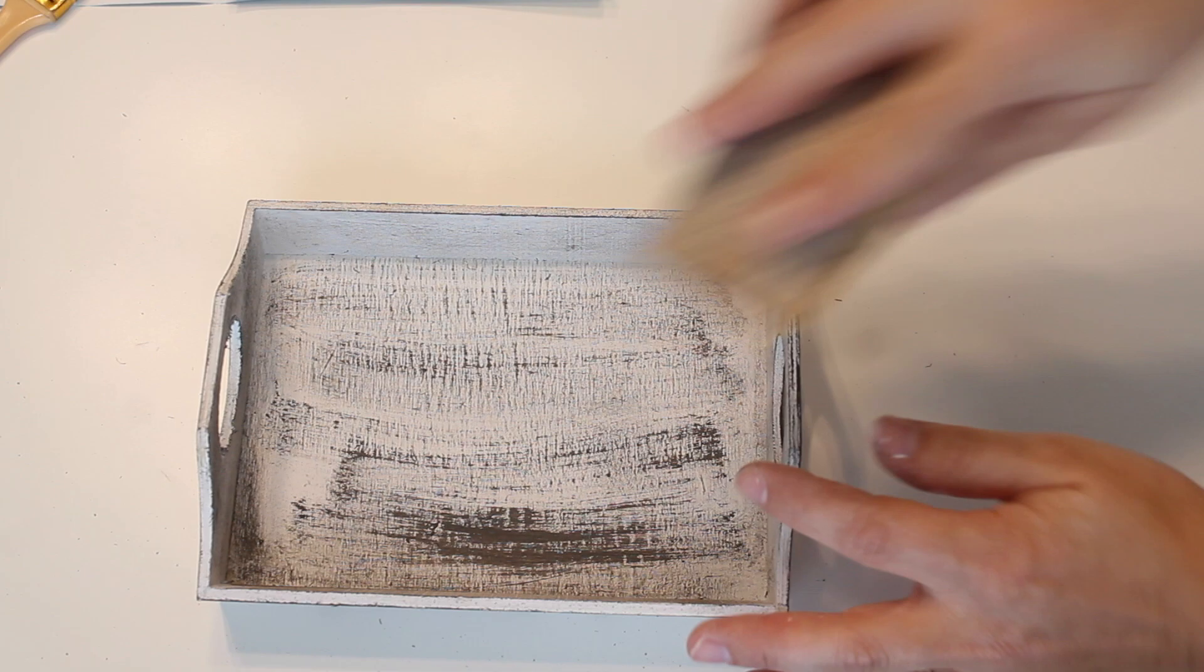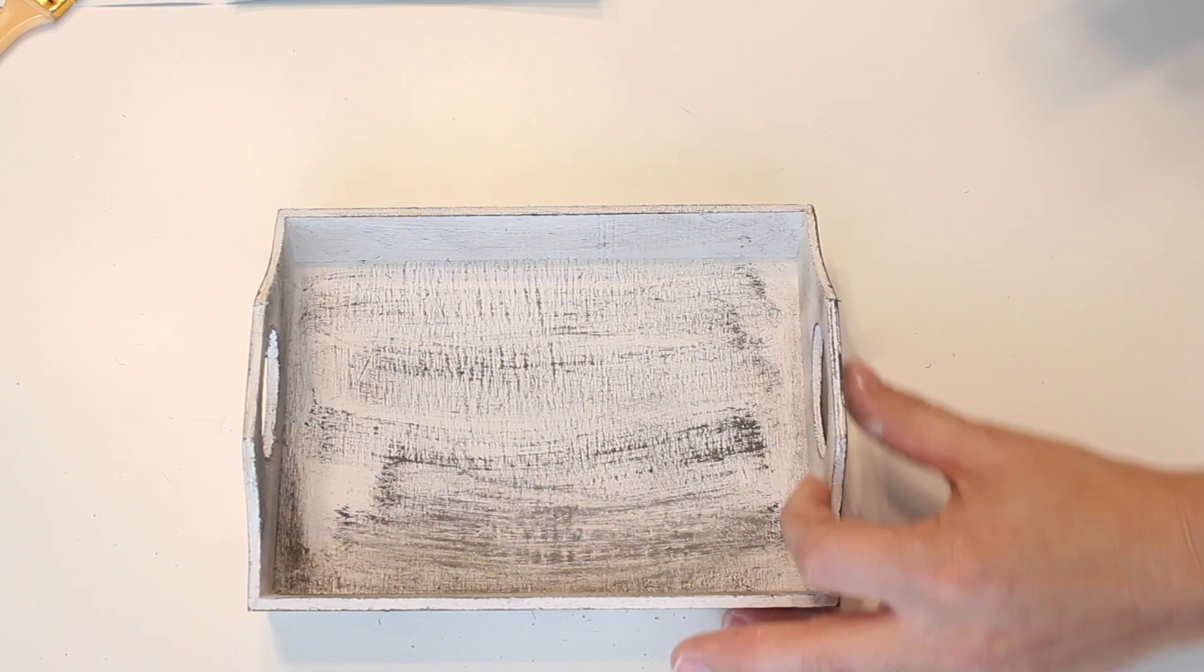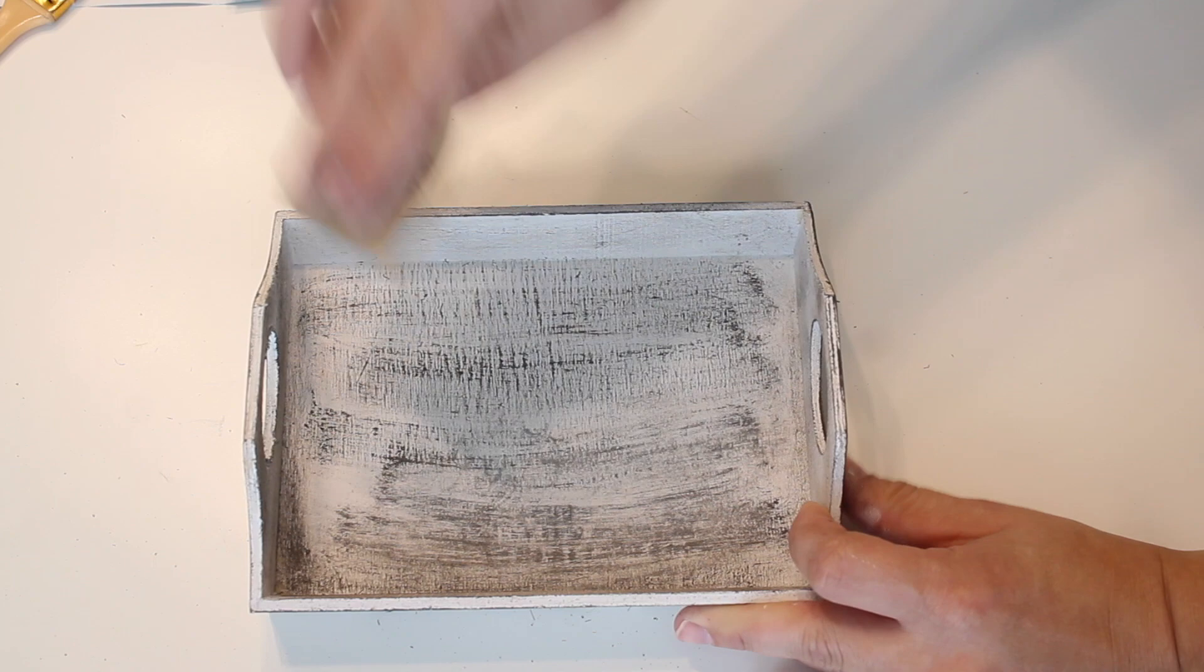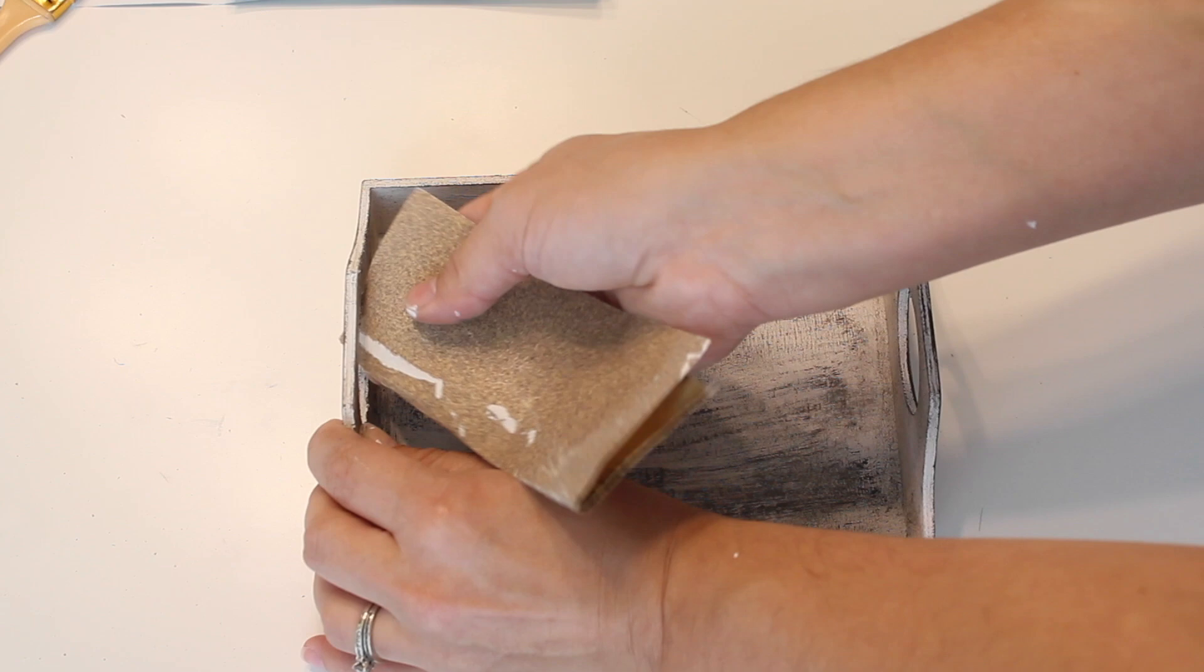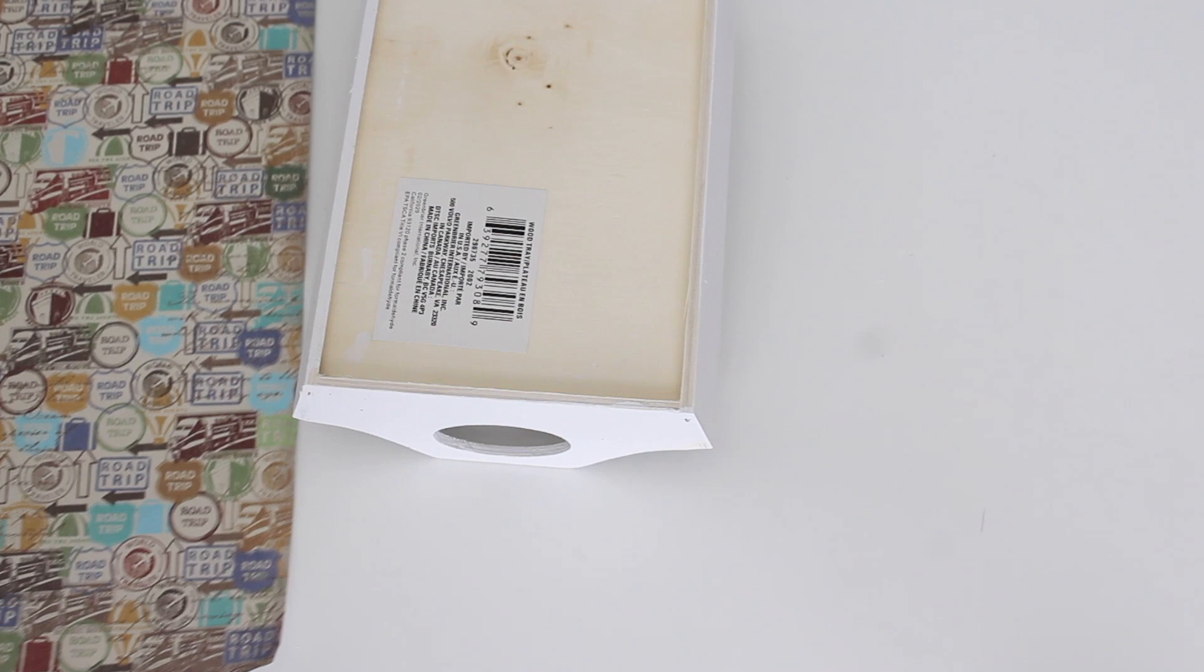Just so you guys know, if you do get a little bit heavy handed, you can always take some sandpaper and just really lightly go over it and it immediately dulls it down. So if you do go a little heavy, that's totally okay. You don't need to repaint the entire thing. Just take a little sandpaper and dilute it, if you will.